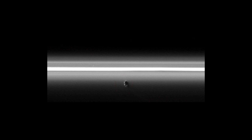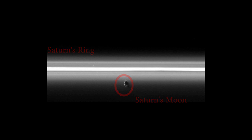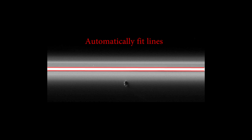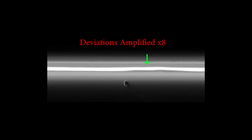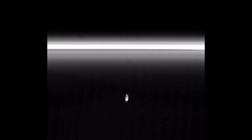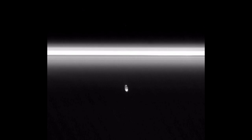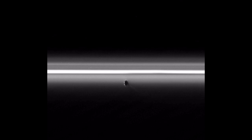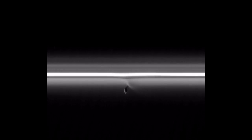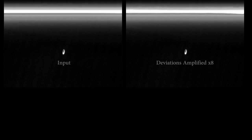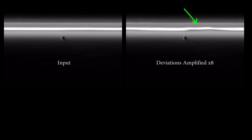This image shows a moon of Saturn interacting with one of its rings. We automatically fit lines to the image and apply our method, revealing a distortion in the ring, possibly caused by the moon. This image is actually one frame in a time lapse, and we can apply our technique to every frame.